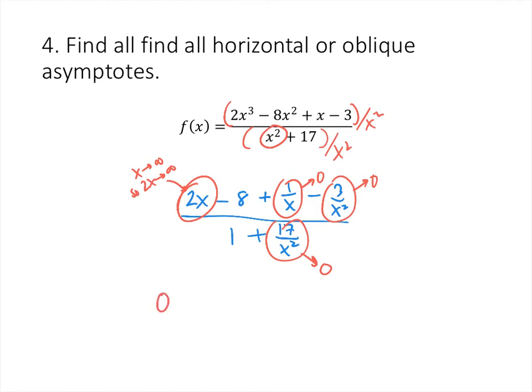We call that line an oblique asymptote. So if we were to graph this function, we would see that as x goes to plus or minus infinity, the graph of the function looks very much like a line that has slope 2.